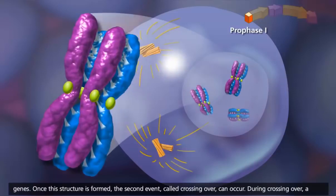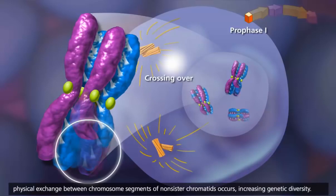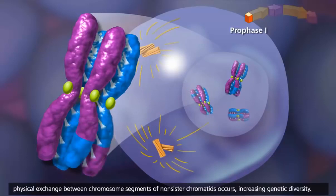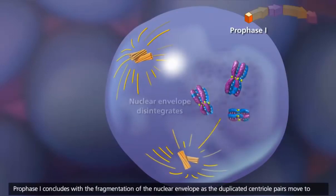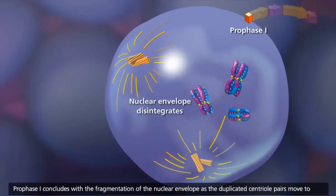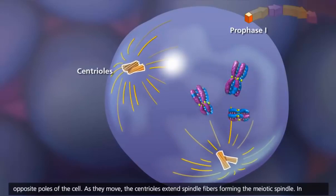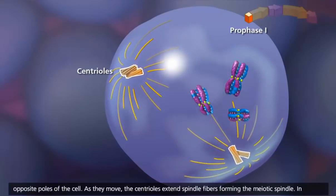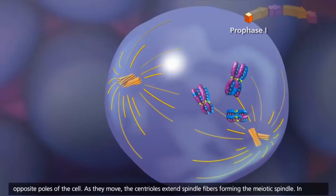Once this structure is formed, the second event, called crossing over, can occur. During crossing over, a physical exchange between chromosome segments of non-sister chromatids occurs, increasing genetic diversity. Prophase I concludes with the fragmentation of the nuclear envelope as the duplicated centriole pairs move to opposite poles of the cell. As they move, the centrioles extend spindle fibers, forming the meiotic spindle.